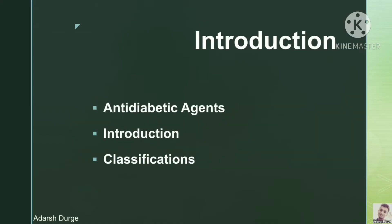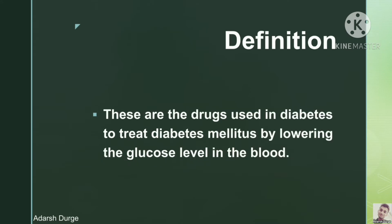We will see the definition and classification of anti-diabetic agents. Definition of anti-diabetic agents: these are the drugs used in diabetics to treat diabetes mellitus by lowering the glucose level in the blood.